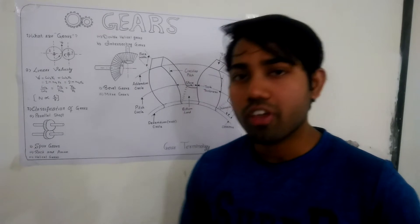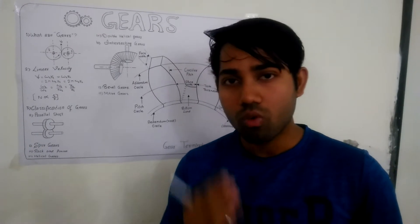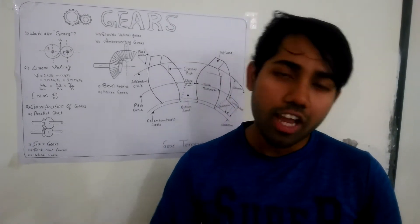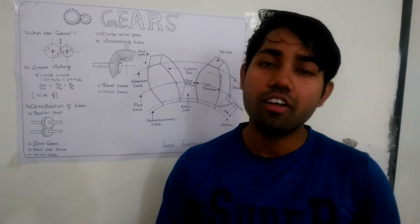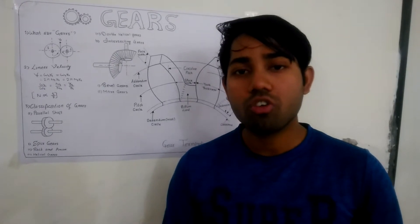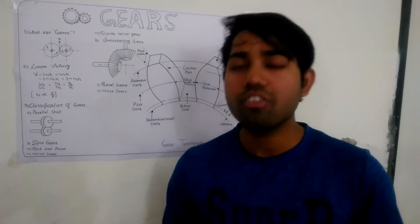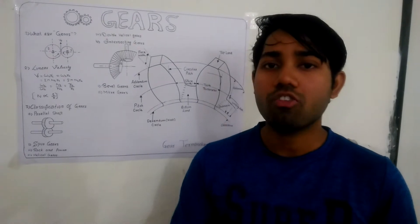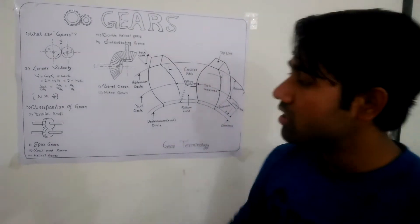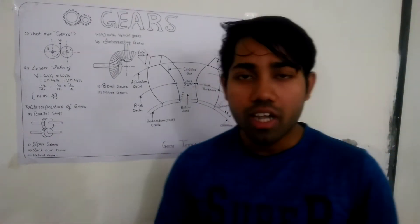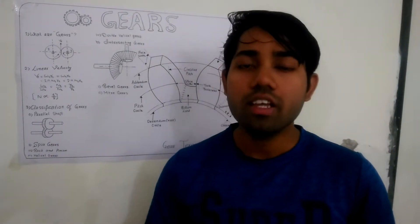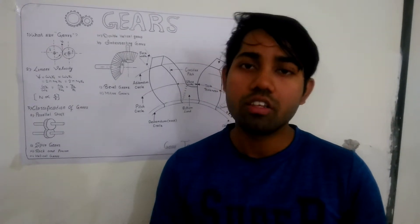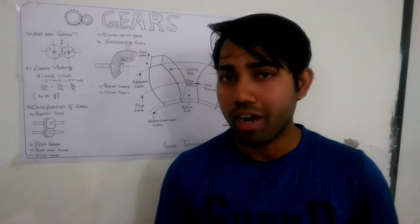Now comes the classification of gears. Gears can be classified according to the relative position of the axis of the shaft. The first classification is parallel shaft — if two shafts are parallel, then they are called a parallel shaft arrangement.